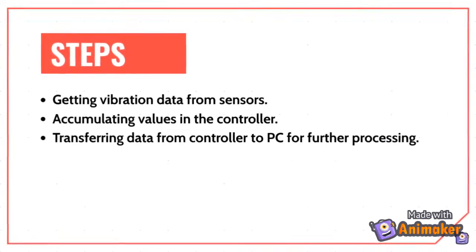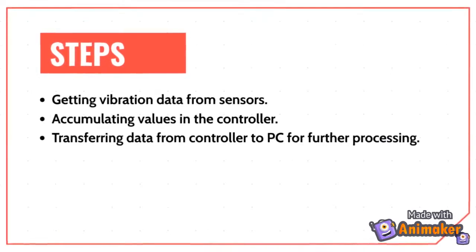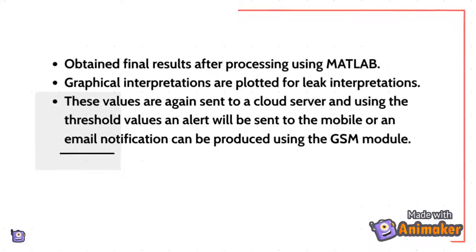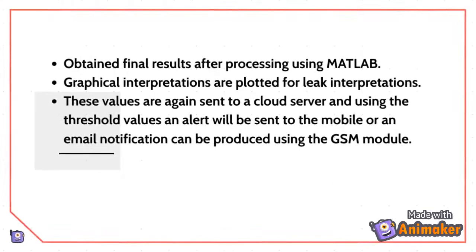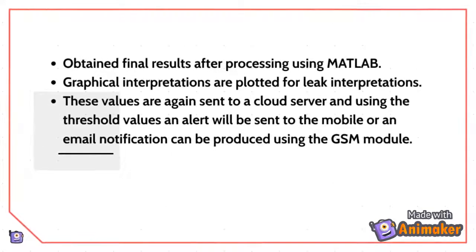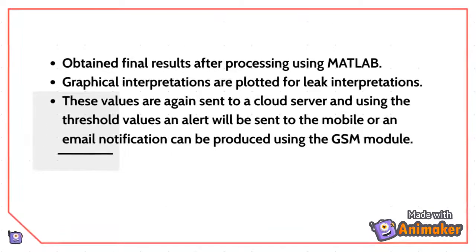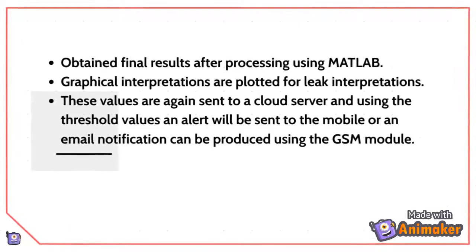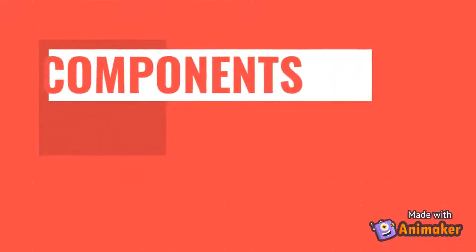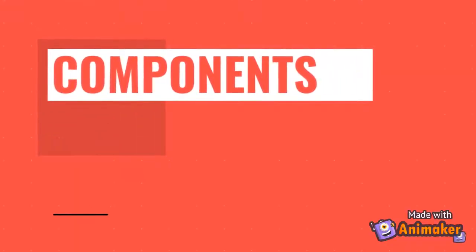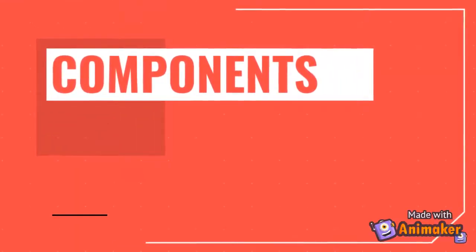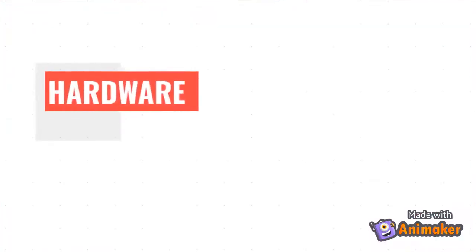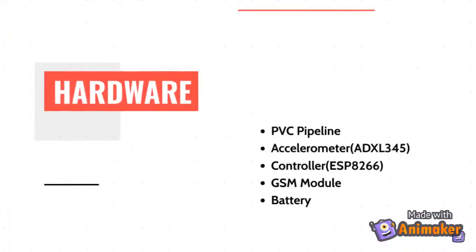Leaks in pipes can be caused by several factors such as pipe age, improper installation, and natural disasters. Therefore, a solution is required to detect and to determine the location of the damage when there is a leak.